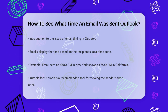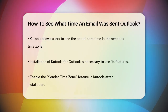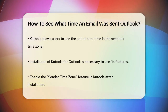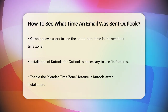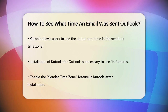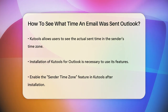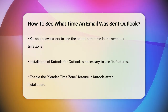To see the actual time the email was sent in the sender's time zone, you can use a tool like Kutools for Outlook. This add-on allows you to display the sent time and the current time of the sender's time zone, making it easier to coordinate responses across different time zones.